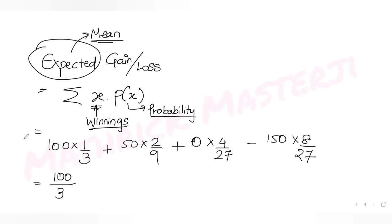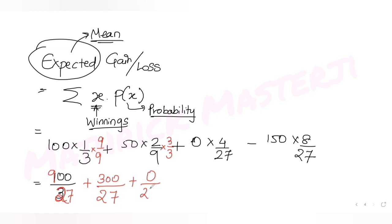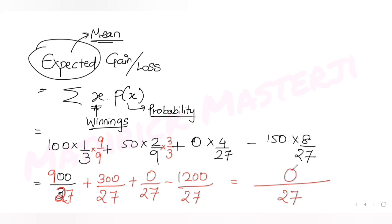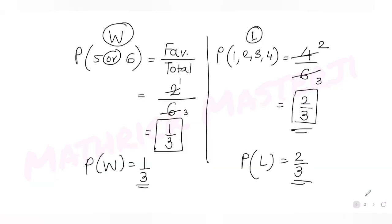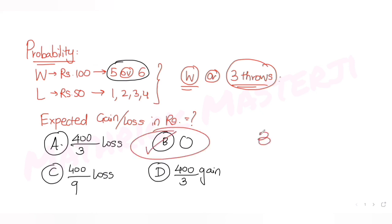Converting to a common denominator of 27: 100/3 becomes 900/27, 50 × (2/9) becomes 300/27, the zero term stays 0/27, and −150 × (8/27) = −1200/27. Adding the numerators: 900 + 300 + 0 − 1200 = 0. So the expected gain or loss is 0/27 = 0. The answer that matches is option B.